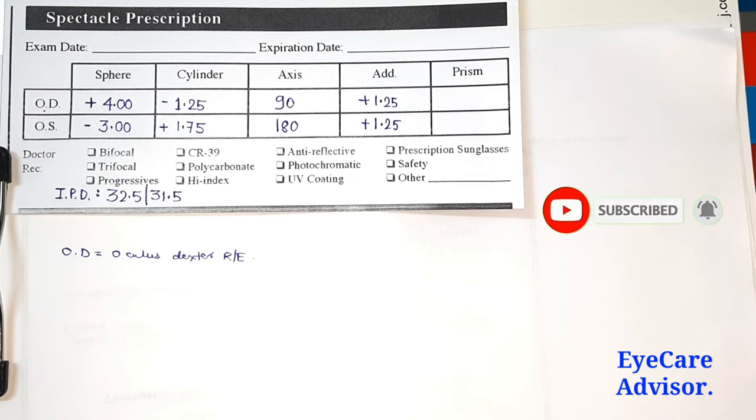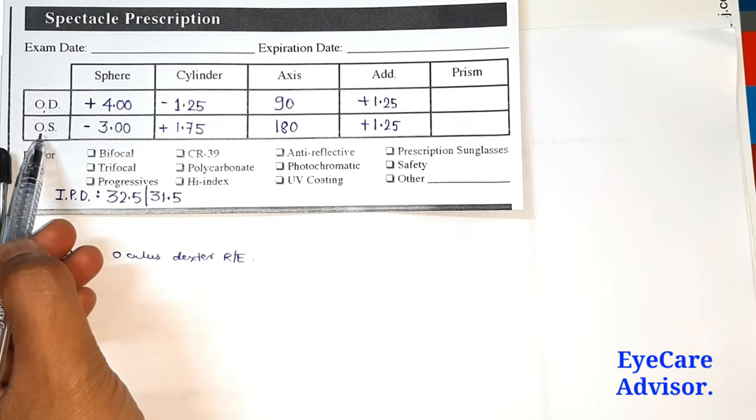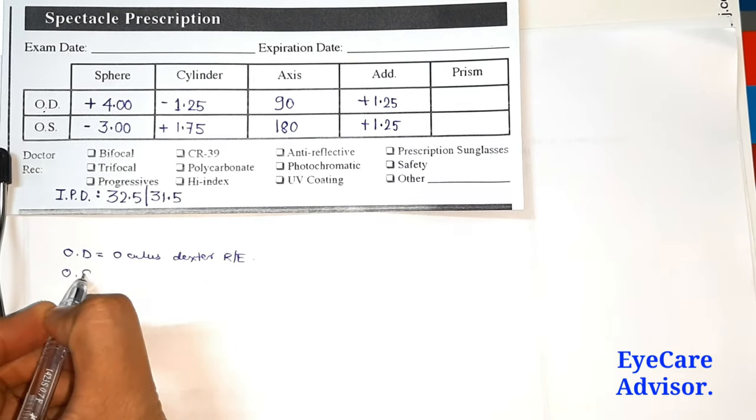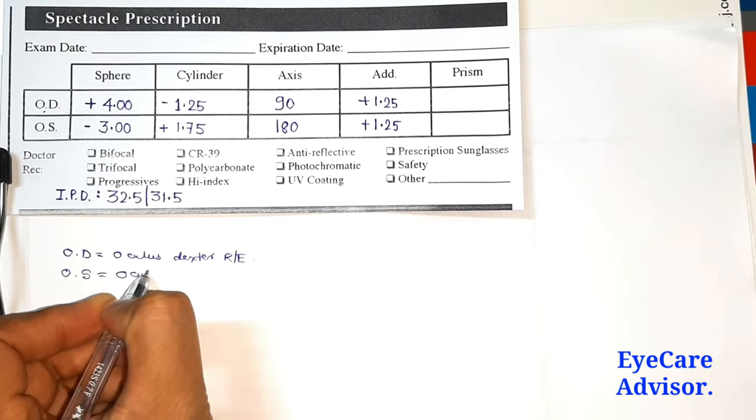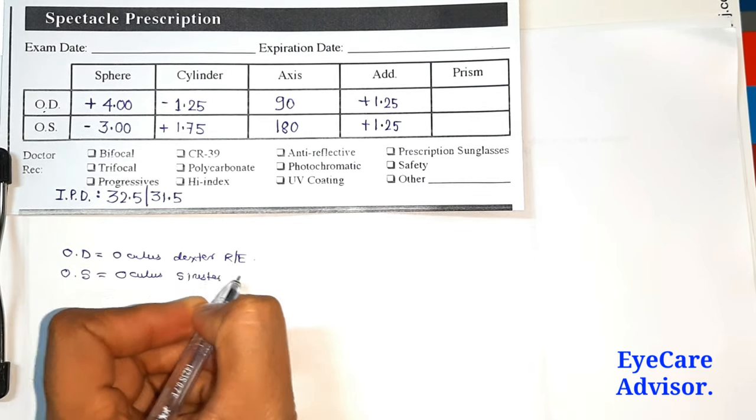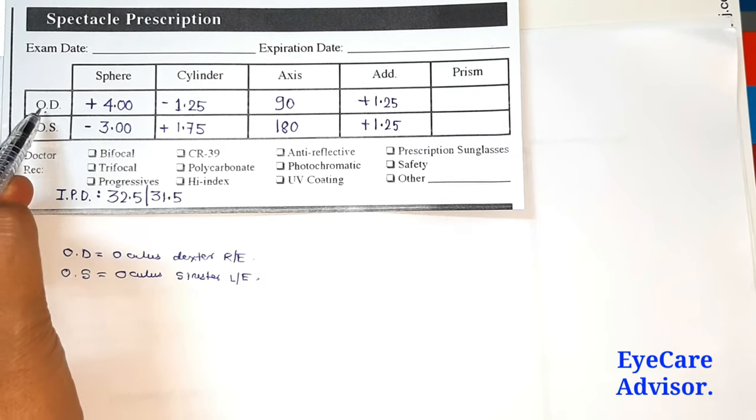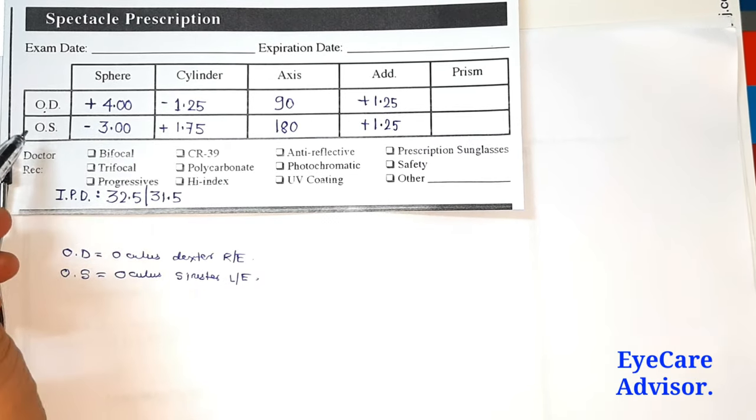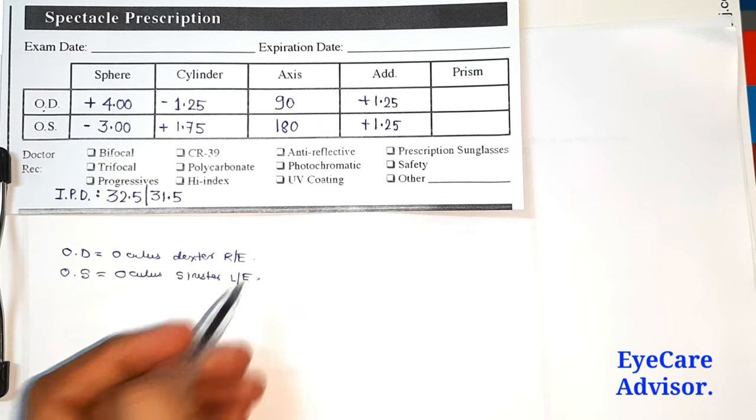After that, what we will see here is OS. OS means oculus sinister, that means the left eye. So what we learn here is OD is the right eye and OS is for the left eye prescription.